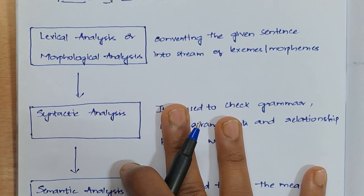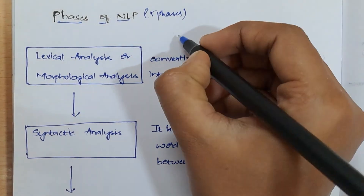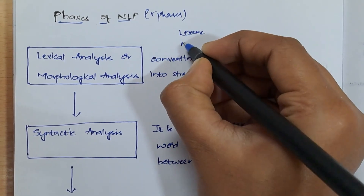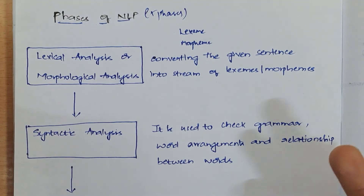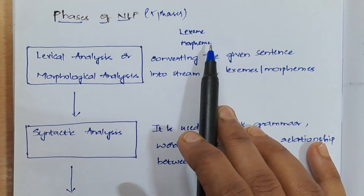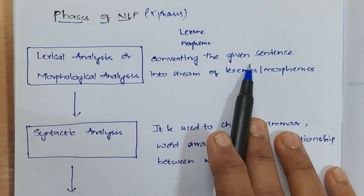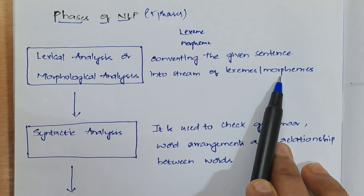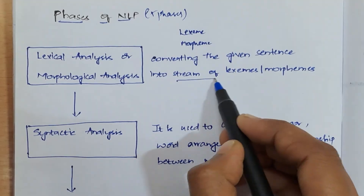Let me discuss about lexical analysis first. This is the first phase of NLP, also known as morphological analysis. To discuss this analysis, we need to know what is a lexeme and what is a morpheme. Lexeme is dividing the given sentence into subwords, words, or stream of characters. Morpheme is the smallest unit of a word which has meaning. So lexical analysis is converting the given sentence into a stream of lexemes or morphemes.